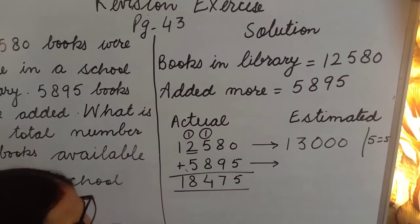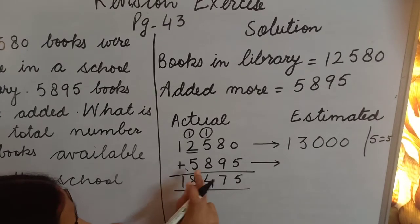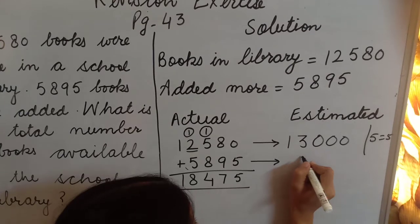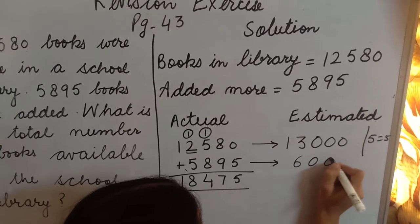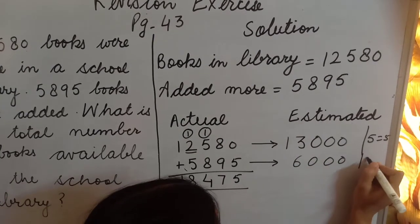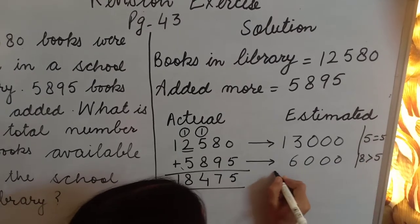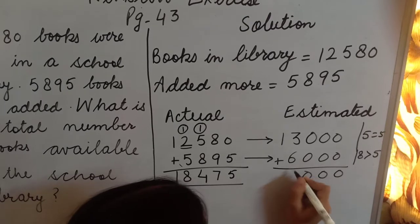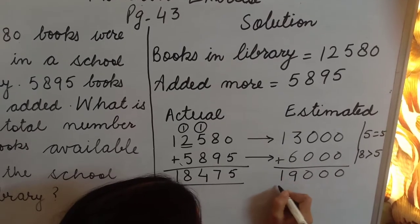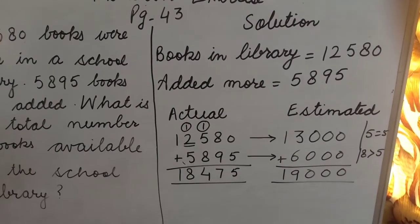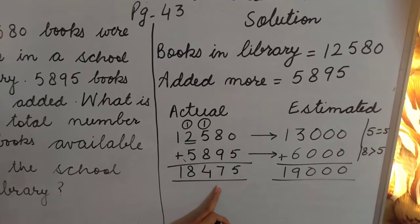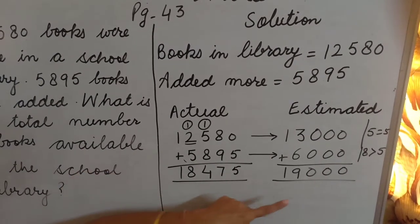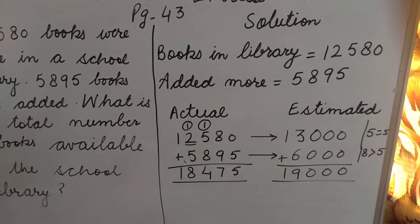Now this side. Here we have to round off at this 5. Before 5 is 8. 8 is bigger than 5, then in this 5 plus 1 will be there, so 6,000. 6 plus 3 is 9, so 19,000. This is 18,475 actual and this is 19,000 estimated. Like this we will find out actual and estimated.